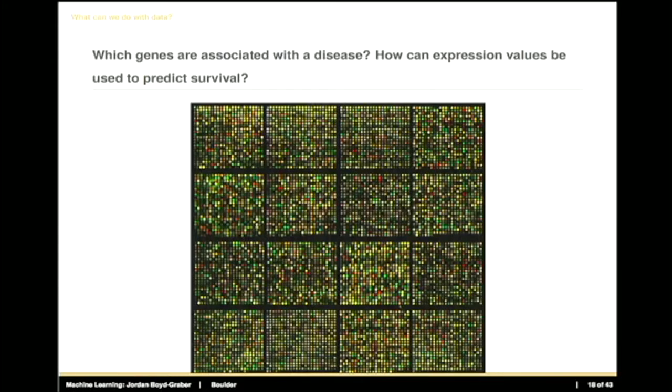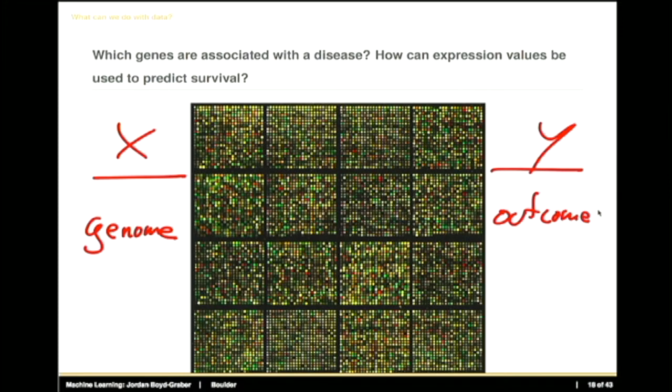Okay, so let's talk about a different question. Let's say that you're asking whether you will have a disease or not given your genome. What in that case is the X, and what is the Y? And in this case the X, again, would be some representation of the genome, whether it's a string sequence or whatever, and the Y, again, would be, so the question is how can expression values be used for survival? So will this person survive or not? Yes. So outcome.